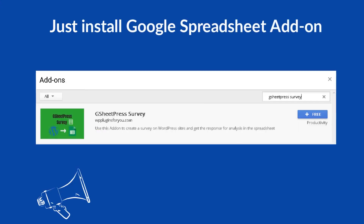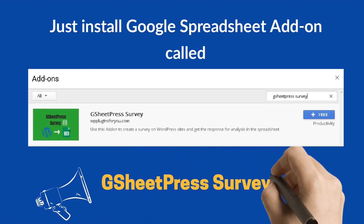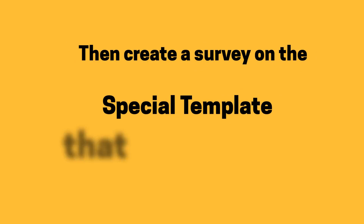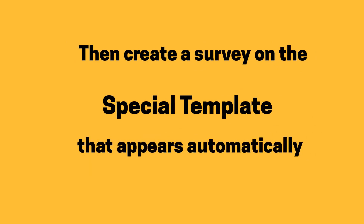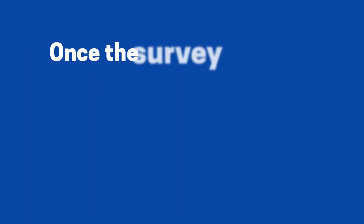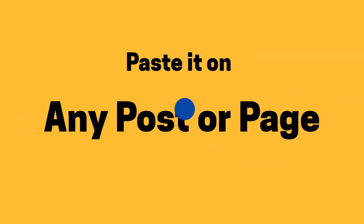Just install the Google Spreadsheet add-on called GSheetPressSurvey from the directory. Then create a survey on the special template that appears automatically. Once the survey is created, publish it.